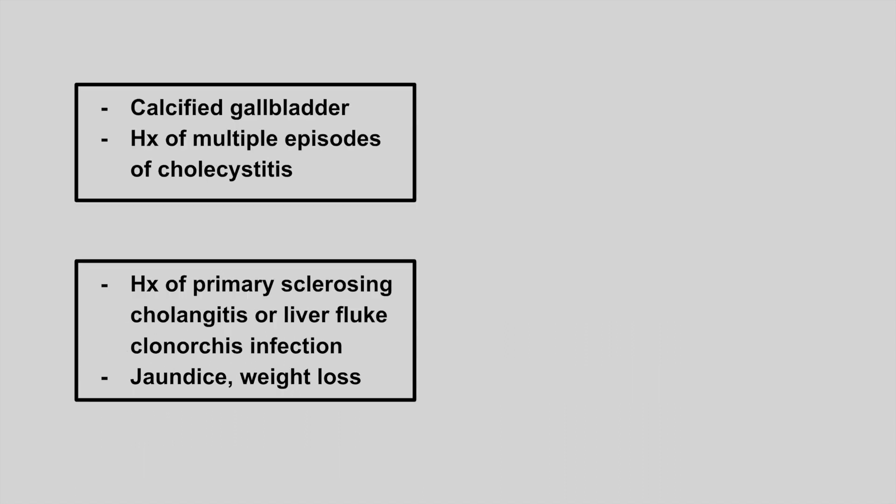The next patient has a calcified gallbladder and a history of multiple episodes of cholecystitis. This is porcelain gallbladder, which is high yield because these patients are at very high risk of gallbladder adenocarcinoma. We must perform a cholecystectomy to remove the gallbladder and prevent these patients from developing gallbladder cancer.